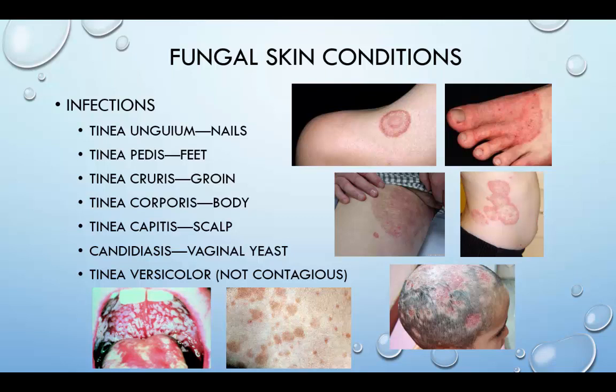Tinea cruris is jock itch and involves the genitalia, but often originates in the feet. Crural and perineal folds between the scrotum and inner thighs are usually the first areas to exhibit small patches of erythema and scaling. Other signs and symptoms include diffuse, thick, dark lesions, weeping vesicles, or pustules on the margins of the inflammation and severe itching. Infections can spread to the thighs, perineal area, buttocks, and the abdomen.